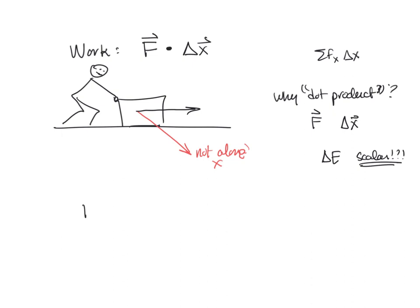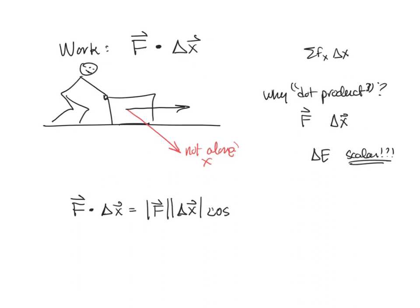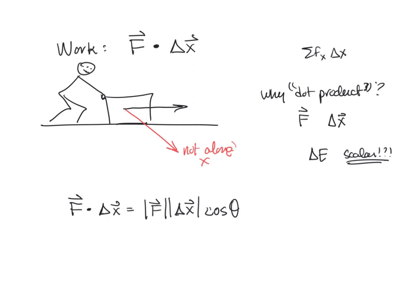And here's how it works. When you take the dot product of a vector with another vector, you have the strength of the first vector, or the magnitude, like how long the arrow is, times the magnitude of the next vector, multiplied by the cosine of the angle between the two vectors.